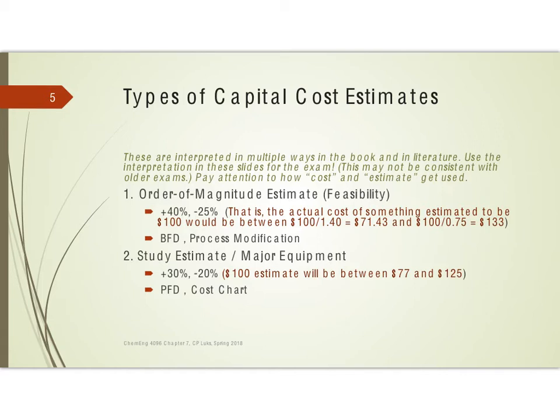The next type is the study estimate, where you've started designing the major equipment. You've decided on distillation, figured out how many trays you need and maybe the diameter, but haven't exactly determined what type of downcomers you're going to use and those kinds of things.